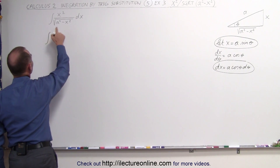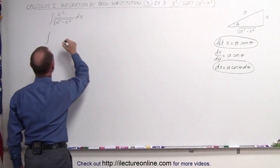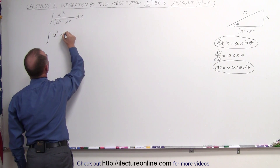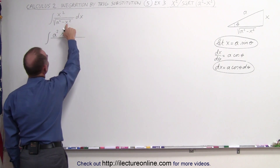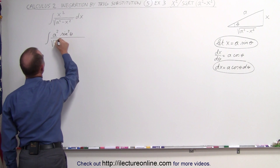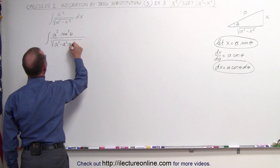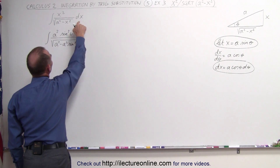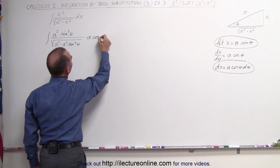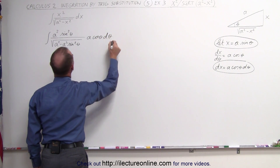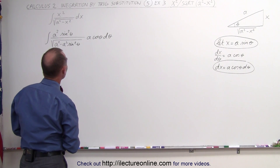This then becomes the following. Instead of writing x squared, we're going to write a squared times the sine squared of theta in the numerator. In the denominator, we'll replace x by the same thing, so we get the square root of a squared minus a squared times sine squared of theta. And instead of dx, we write a times the cosine of theta dθ. So now we have everything in terms of theta instead of x.